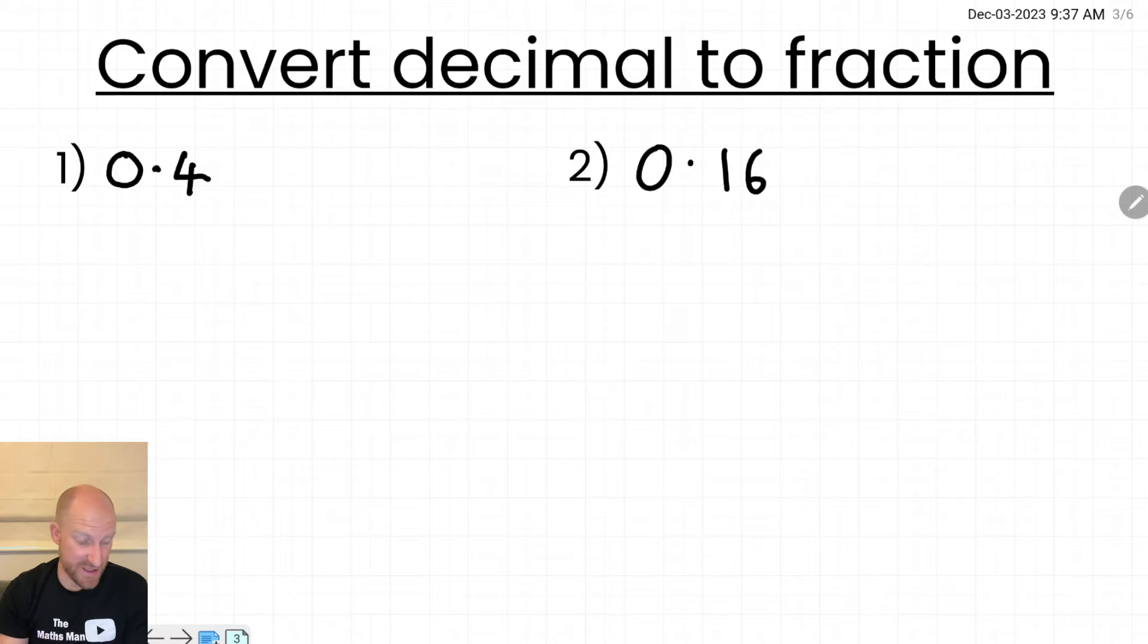Let's take a look at the first example which is 0.4. Now when we are converting decimals to fractions we are going to be multiplying by 10, 100 or 1000. We are going to pick whichever one of those gives us a whole number first. So with 0.4 I only need to multiply it by 10 to change this into a whole number.